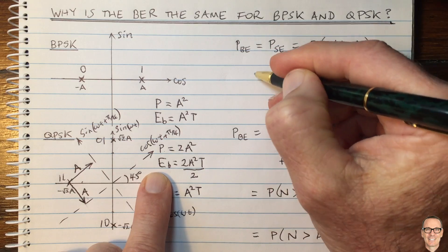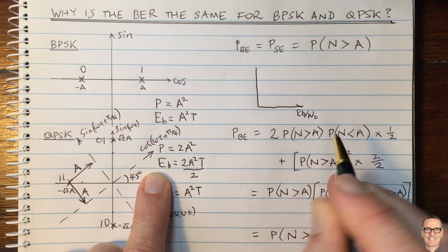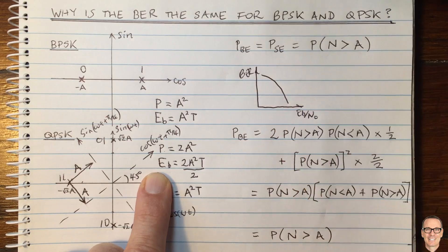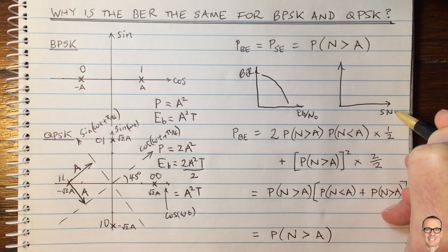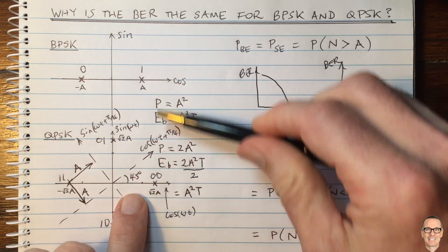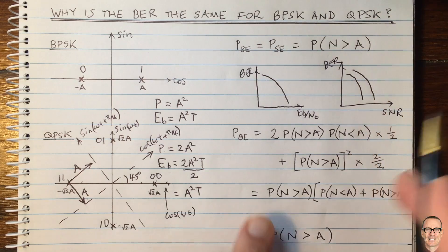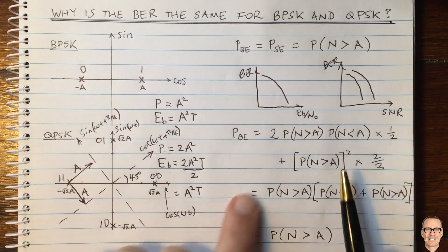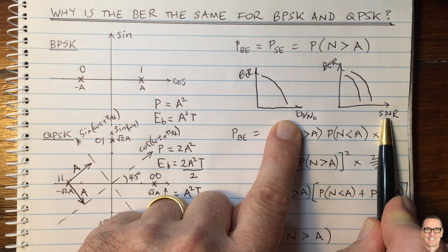So if you're plotting bit error rates as a function of energy per bit divided by noise power — which is often how it's done — then the two curves are the same. If you're plotting bit error rate as a function of signal-to-noise ratio, that's related to power, and clearly the power is different in these two examples, so the curves would be different. The bit error rate is the same only when you're comparing the same energy per bit, not the same signal-to-noise ratio.